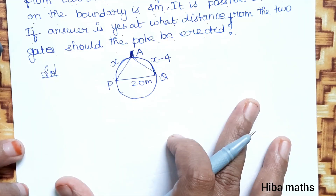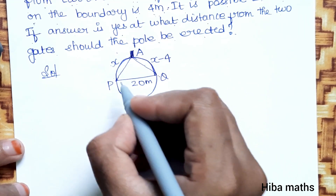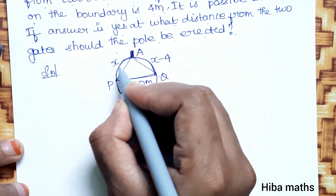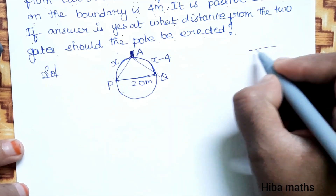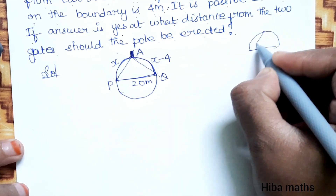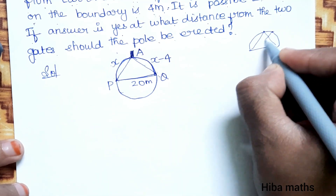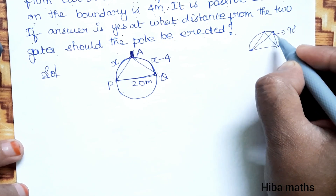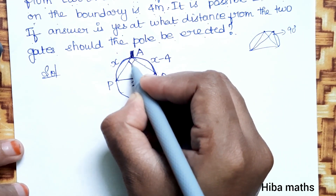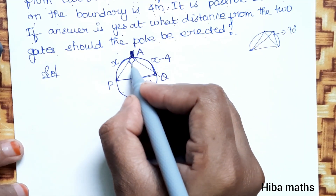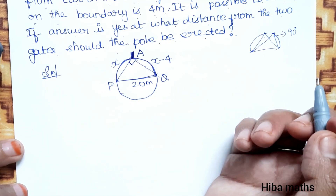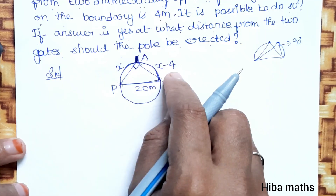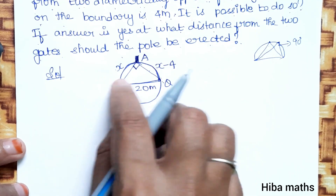The concept is: there is a circle with a diameter. This is a semicircle. In a semicircle, the angle at the circumference subtended by the diameter is 90 degrees — this is a right angle. The right-angle triangle allows us to apply the Pythagorean theorem to find the value of x, which represents the distance.